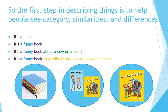For example: It's a book. It's a funny book. It's a funny book about a cow on a couch. It's a funny book that tells a story about a cow on a couch. You can see how adding detail moves from general to specific.